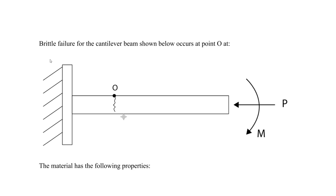Let's focus on an FE-type question for brittle failure for a cantilever beam. In the previous question we were using failure theory for the maximum shear stress or the energy distortion theory, but that was only applicable to ductile failure. For brittle failure we have to use different theories — specifically the maximum normal stress theory or the Mohr-Coulomb theory.